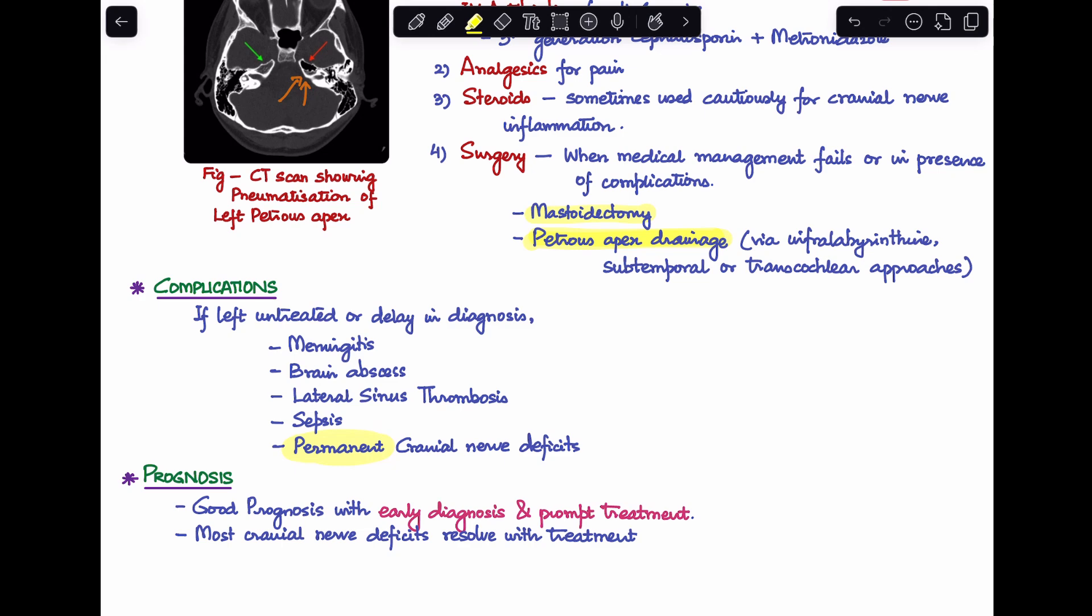Yes, this disease has a very good prognosis if you can do an early diagnosis and treat the patient promptly. Most of the cranial nerve deficits resolve with treatment. So this is all about Gradenigo's syndrome. This is a typical short note that you get in your theory exams and it can even come up as a viva question where you're asked what is the triad that you see in Gradenigo's syndrome and what condition do you see Gradenigo's syndrome in. If you have any further questions, please note them down in the comment section and I'll get back to you.